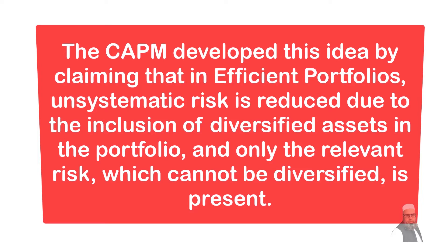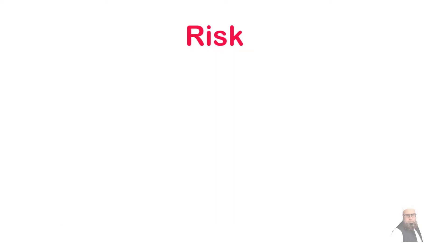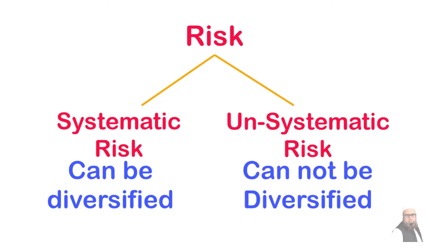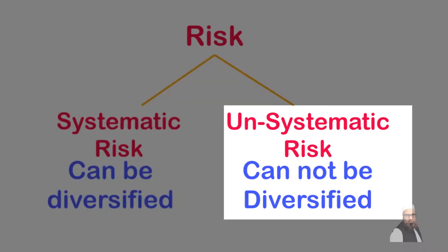The CAPM extended this theory and claimed that in efficient portfolios, unsystematic risk will be minimized due to the inclusion of diversified assets, and only the relevant risk will be systematic risk — which cannot be diversified. So risk has two components: systematic risk that cannot be diversified, and unsystematic risk that can be diversified.